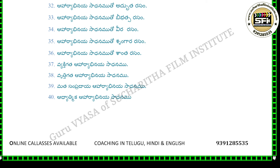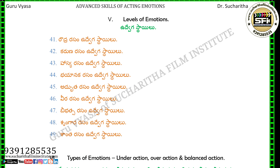Adhyatmika Ahariya Abhinaya Sathanaamu. Chapter 5: Levels of Emotions. Lesson 41 - Raudra Rasam, Lesson 42 - Karuna Rasam, Lesson 43 - Hasya Rasam, Lesson 44 - Bhayanaka Rasam.